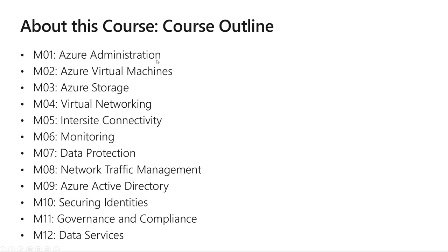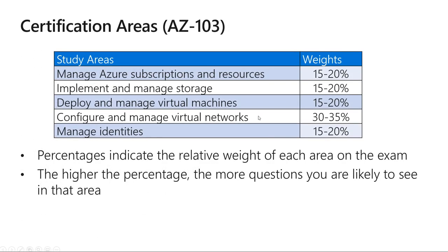The course is structured into 12 modules: basic Azure administration, virtual machines, storage, virtual networking, inter-site connectivity, monitoring, data protection, network traffic management, Azure AD, security and identities, governance and compliance, and data services. In terms of exam weights, virtual networking is 30 to 35 percent of the exam — about one third. Identities, virtual machine storage, and resources and subscriptions make up the rest at similar scales.